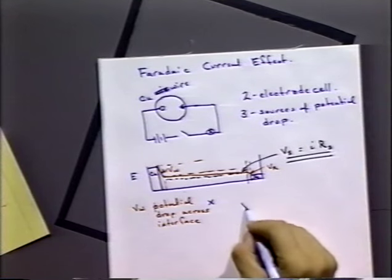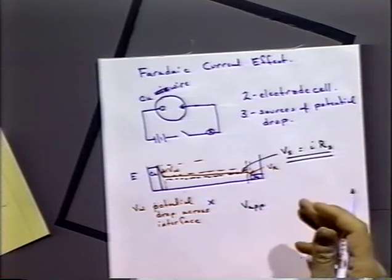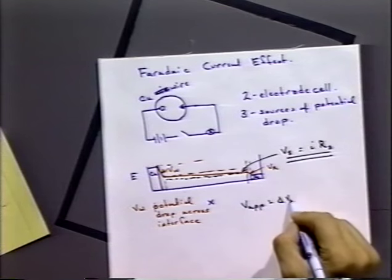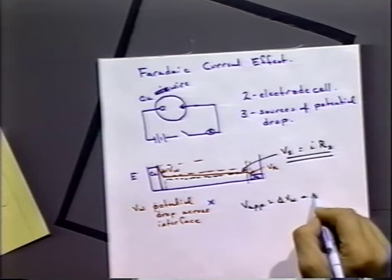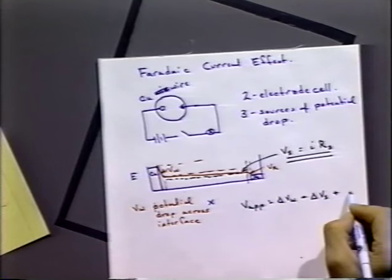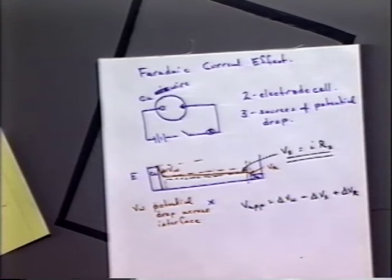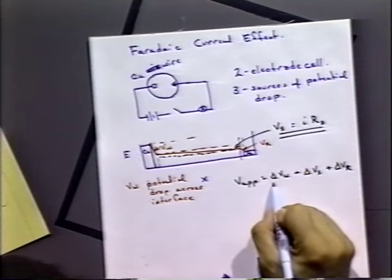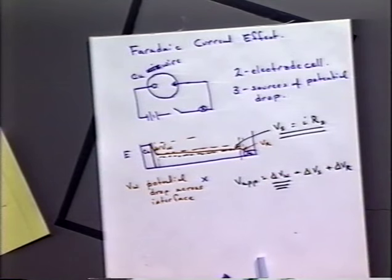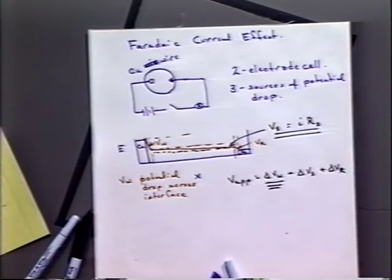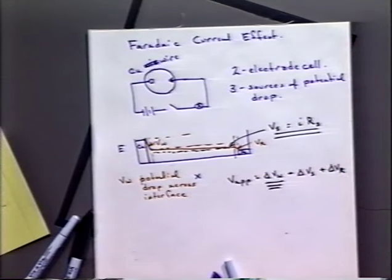The potential drop that we see — if we sum up all the potential drops — gives the applied potential. So it's going to be the potential drop across the working electrode interface, plus the potential drop across the solution, plus the potential drop across the reference electrode. We're only interested in the potential drop across the interface. We want to minimize the potential drop across the solution and minimize the potential drop across the reference electrode, which makes our life much easier.